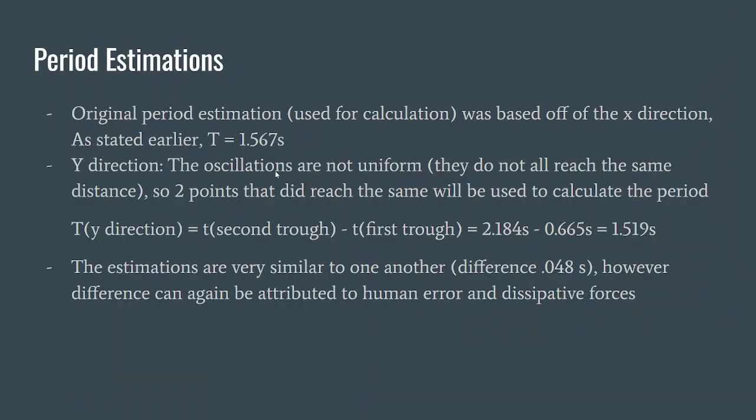And then for the other what does it mean question, we have the period estimations. And as you can see our original period, because the X direction one is used as 1.567 seconds, because that's moving it side to side.